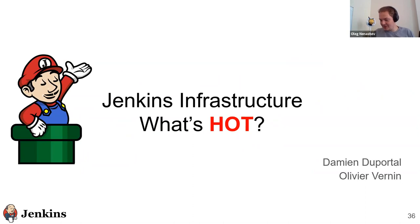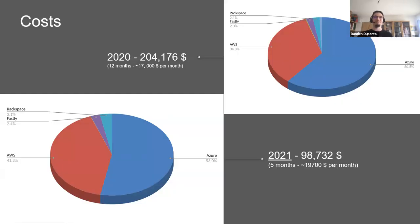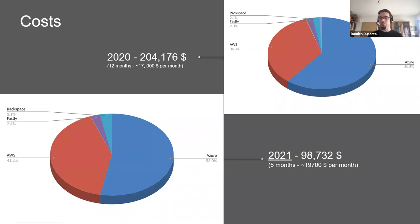Next topic is Jenkins infrastructure. I'm replacing Olivier today — he has a child who is sick, so he's excused and it's a good excuse. What happened during the past month on the infrastructure: the cost increased. These are facts — it's almost $2,000 per month more. You can also see that the repartition between AWS, Azure, and other sponsors has shifted a bit. We depend a bit less on Azure.